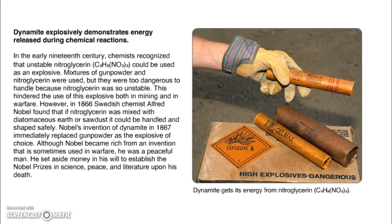Dynamite explosively demonstrates energy release during chemical reactions. In the early 19th century, chemists recognized that unstable nitroglycerin could be used as an explosive. Mixtures of gunpowder and nitroglycerin were used, but they were too dangerous to handle because nitroglycerin was so unstable. This hindered the use of this explosive both in mining and warfare. A big thing with the mining that they used it for was when they made all the transcontinental railroads. So that was a huge use of dynamite. If you've ever seen Little House on the Prairie, in some of the episodes, they're like hauling dynamite.